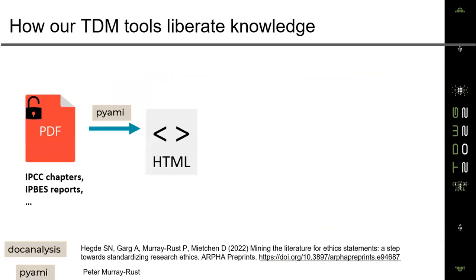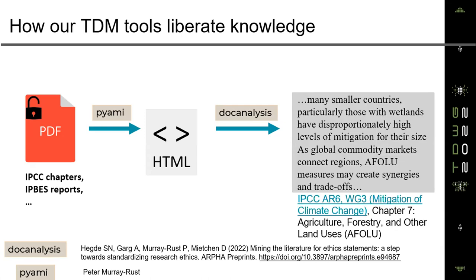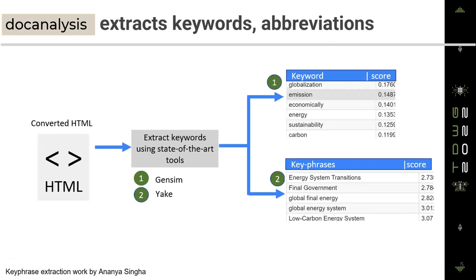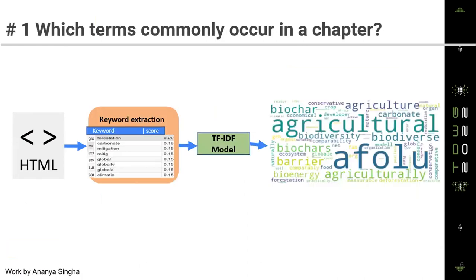Once we have abbreviations and keywords, we can ask basic questions like which terms commonly occur in a chapter of an IPCC report. We then create dictionaries — either from the extracted keywords and abbreviations, or from other resources like Wikipedia, or directly from Wikidata by writing a SPARQL query (for example, to get all country names). These dictionaries are essentially ontologies containing information about each entry, and most importantly, each entry also has a Wikidata ID associated with it.